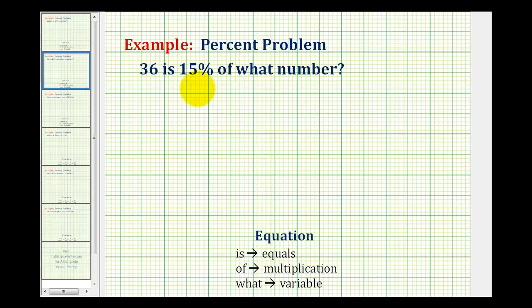This is the second of three types of percent problems we'll be solving using a percent equation. When using a percent equation, we need to remember that 'is' represents equals, 'of' represents multiplication, and 'what' or 'what number' represents the unknown, so we'll use a variable.